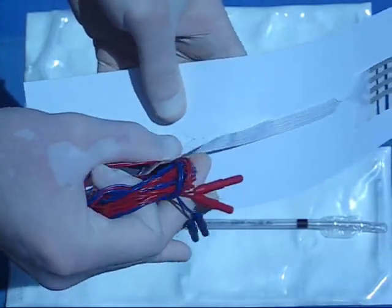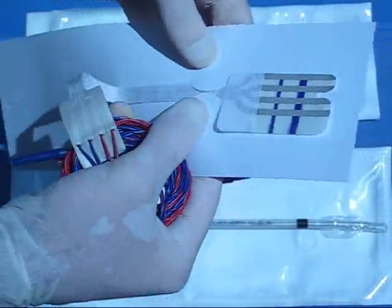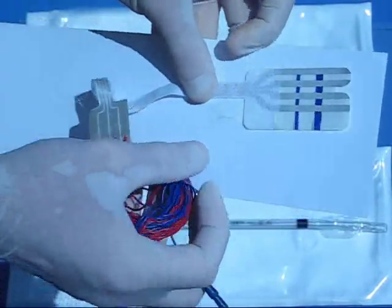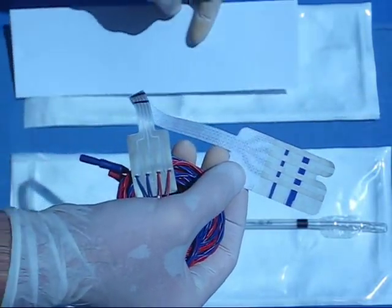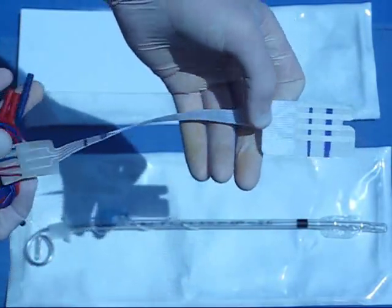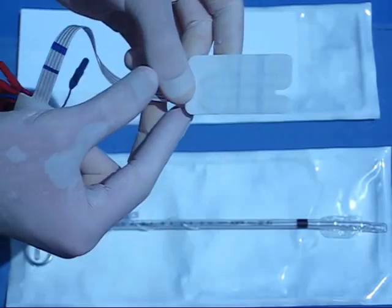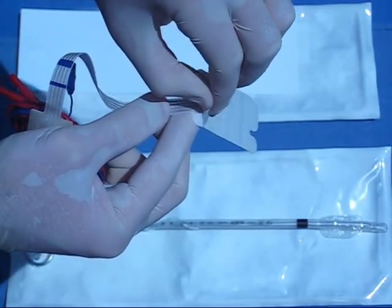Remove the electrode from the peel pouch and then separate it from its plastic holder. Turn over the electrode and peel off the paper backing, exposing the adhesive.